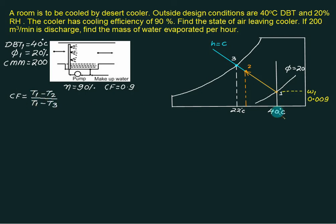T1 you can substitute as 40. T2 you have to find out. Contact factor is 0.9 and the value of T3 is 22. Substitute all values and find out the value of T2. We will get T2 equals to 23.8 degrees Celsius.